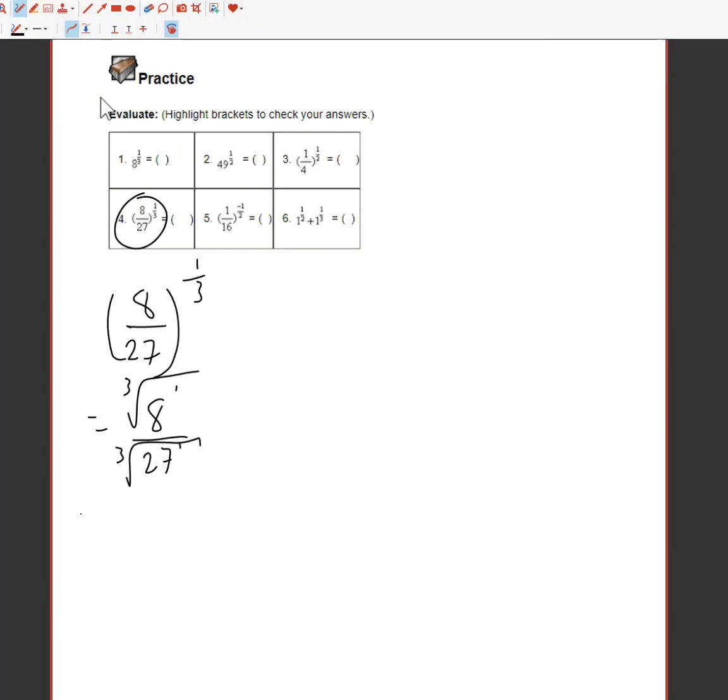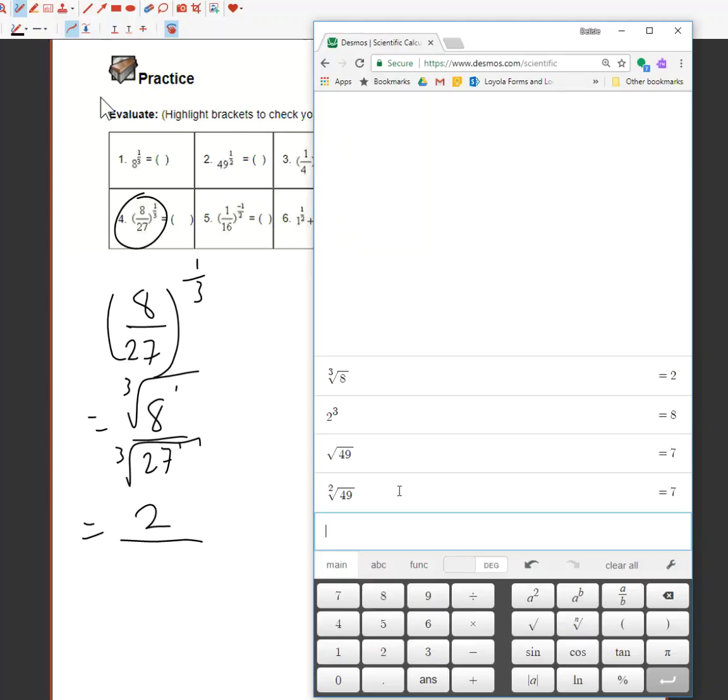So now I've got the 8 to the power of 1 is just 8 and the cube root of 8, we've already seen that one is 2. The cube root of 27, we haven't seen that one yet so I'm going to bring it over here, bring my calculator back again. What is the cube root of 27? So I'm going to use the cube root of 27 and I get the answer of 3. So I'm down to 2 thirds.